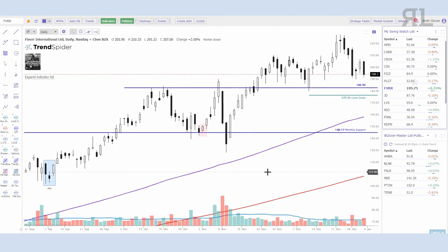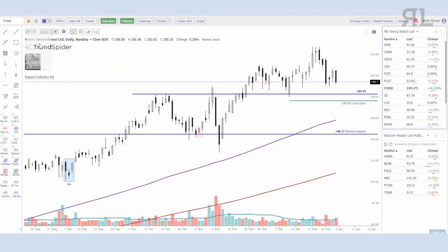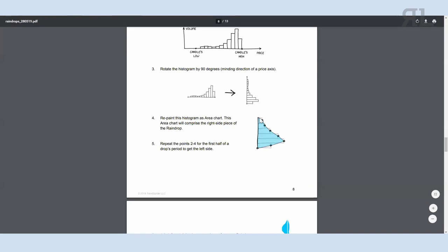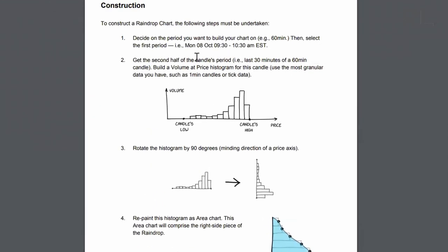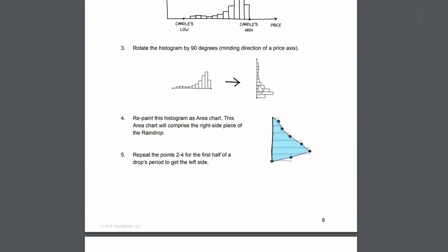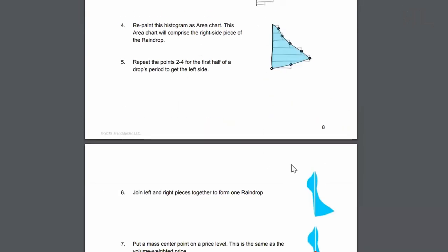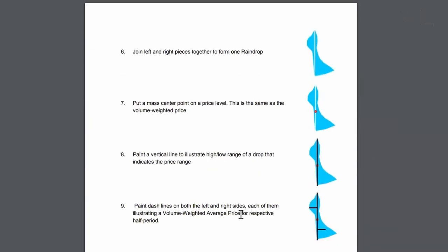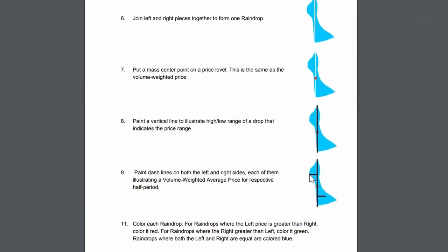The other thing I wanted to talk about is the raindrop candles. I'm by no means an expert, but essentially the raindrops are all based on volume. You decide on the time period — I like to use them on the daily. It builds a volume profile from the candle low to the candle high, where most of the volume in that candle took place, then rotates that to give you the raindrop. The left side is the first half of the period and the right side is the second half. They join them together and add dashes for wherever the VWAP was on each side.